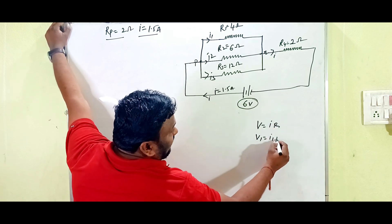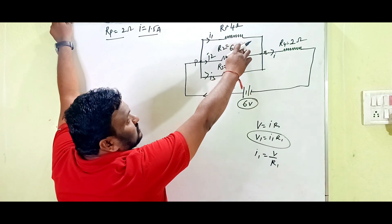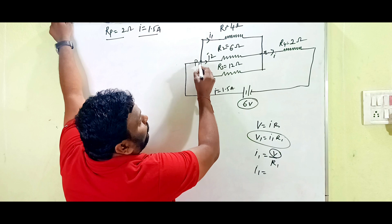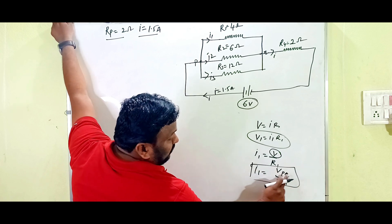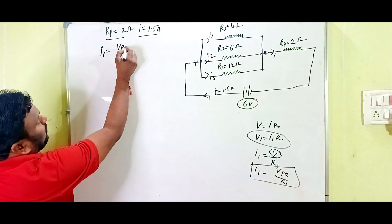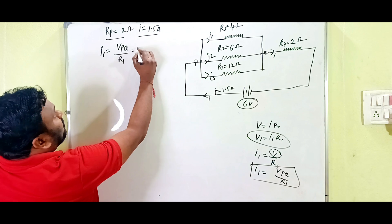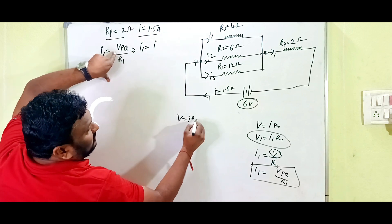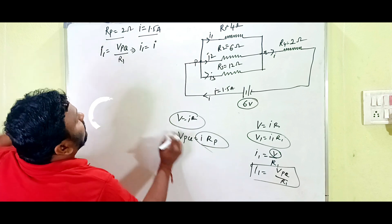Using V = IR, we get I1 = V1/R1. In a parallel combination V1 = V2 = V3 = Vpq (the potential between points P and Q). So I1 = Vpq/R1. Since Vpq = I × Rp, we can write I1 = (I × Rp) / R1.